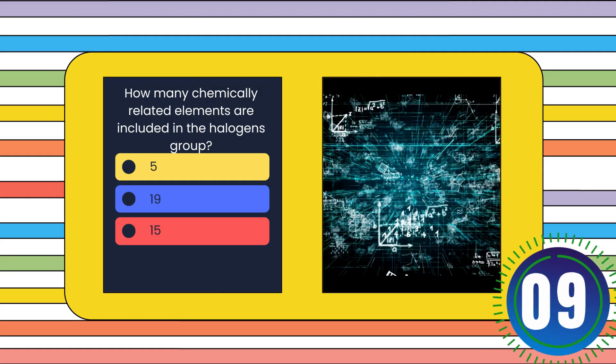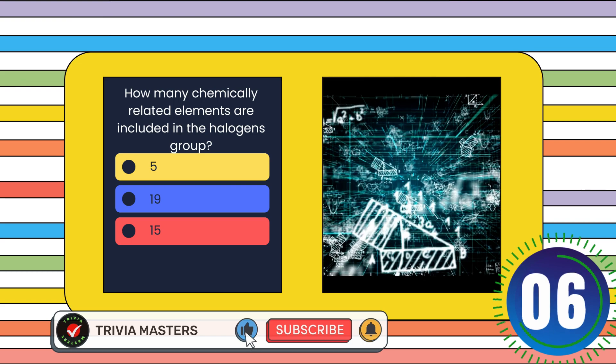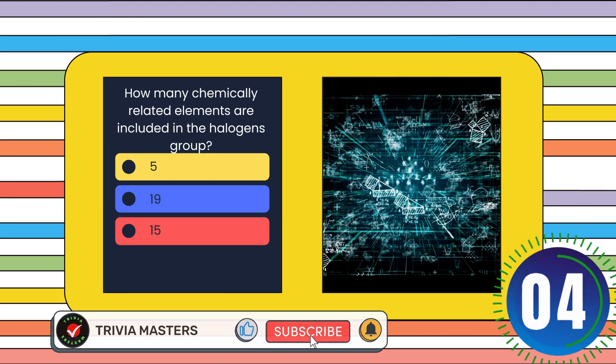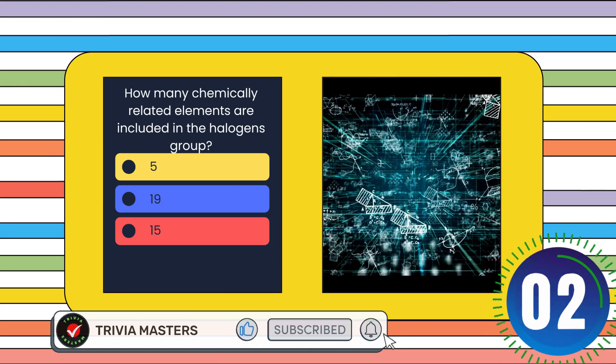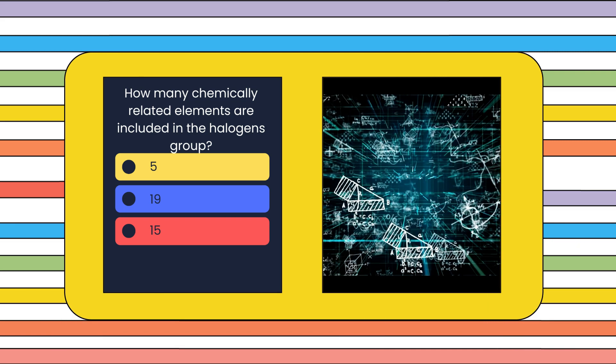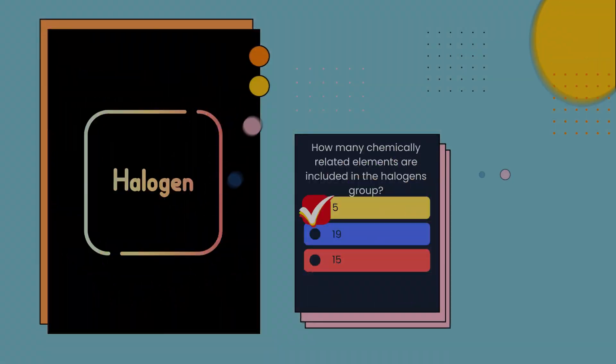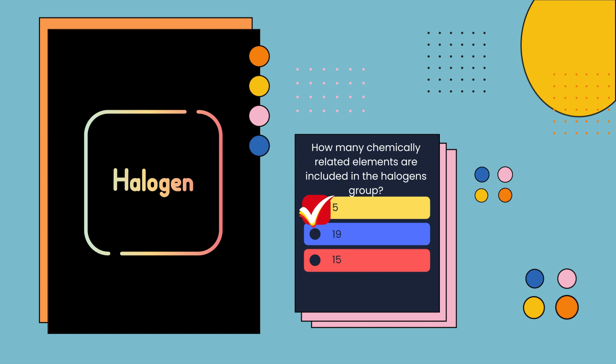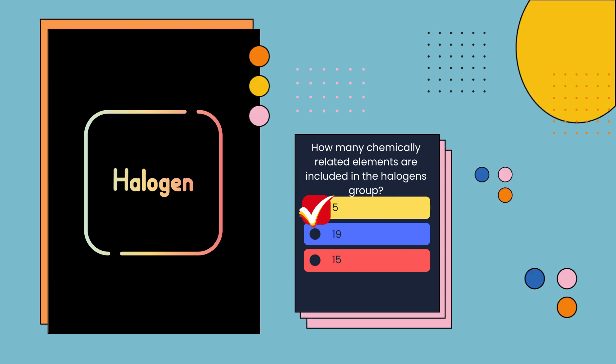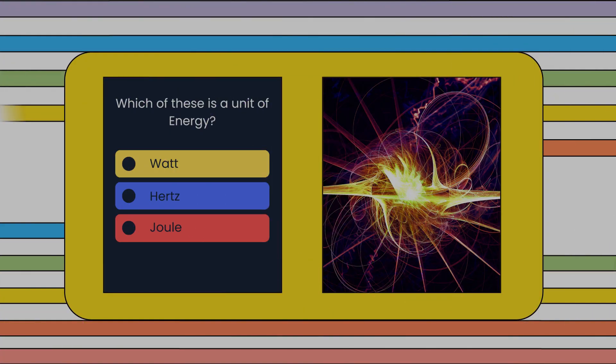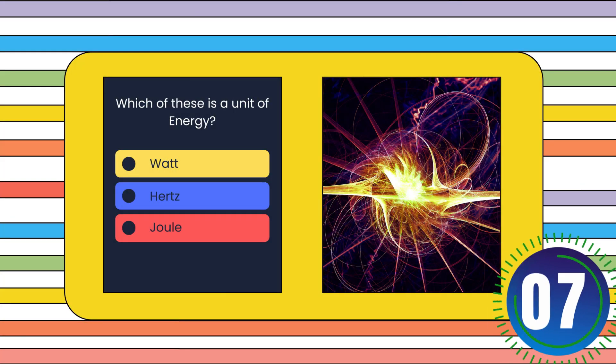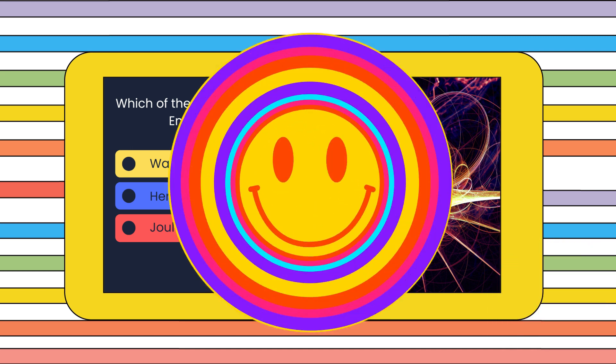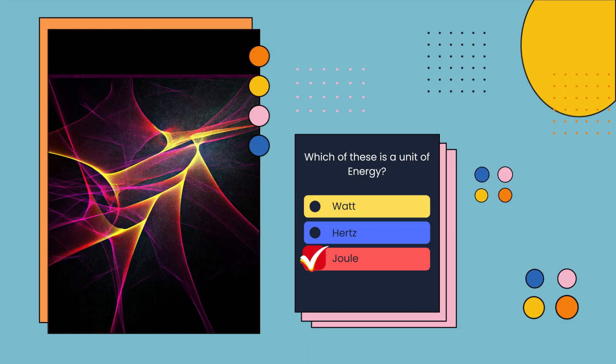How many chemically related elements are included in the halogens group? Five, 19, or 15? Five. Which of these is a unit of energy? Watt, hertz, or joule? Joule.